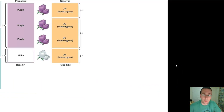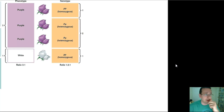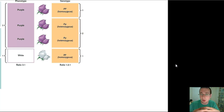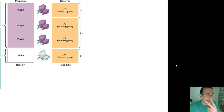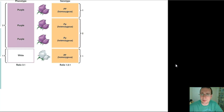What Mendel figures out is that there are two different ways of looking dominant. He figures out that if you are homozygous dominant, you have two of the same version of the gene. Each trait is determined by a factor — he called them factors then, now we call them genes. If you have two of the same version, you're homozygous, or a true breeder. If you have different versions, you're heterozygous, or a hybrid. But the homozygous dominant and the heterozygous look the same — two different ways of looking dominant — and only one way of looking recessive, which is if you have two paired recessive alleles.